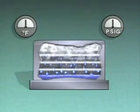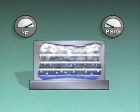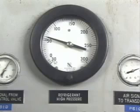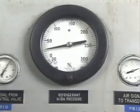Pressure has a similar effect on condensing temperature. When the pressure is increased, steam condenses at a higher temperature. And when the pressure is decreased, steam condenses at a lower temperature. The same effect occurs with the refrigerants in refrigeration systems. When the refrigerant is at a higher pressure, it boils or condenses at a higher temperature. When the pressure of the refrigerant is reduced, it will boil or condense at a lower temperature.